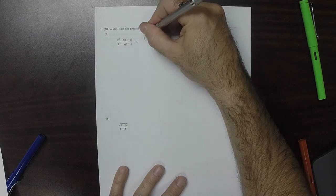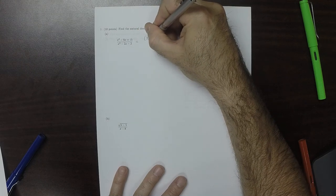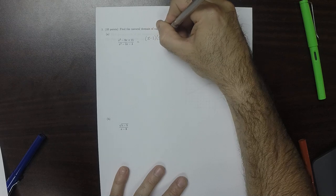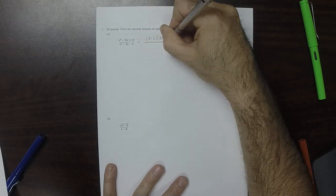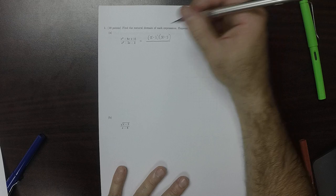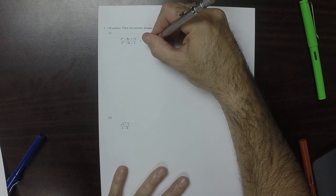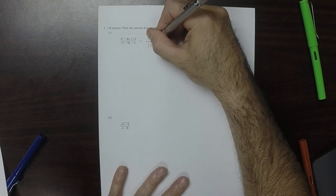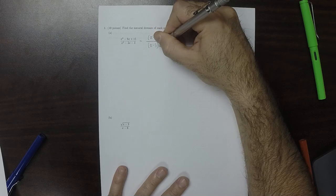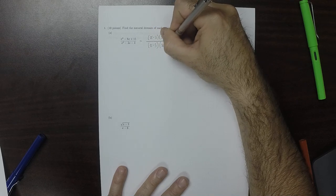Factoring the numerator, that's x minus 3 multiplied by x minus 5. And then factoring the denominator, that would be x minus 3 multiplied by x plus 1.